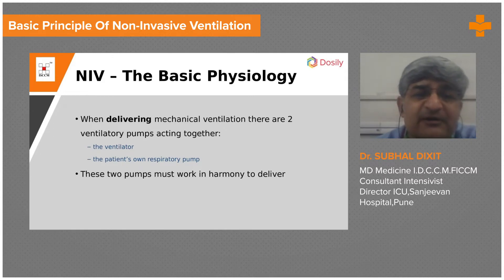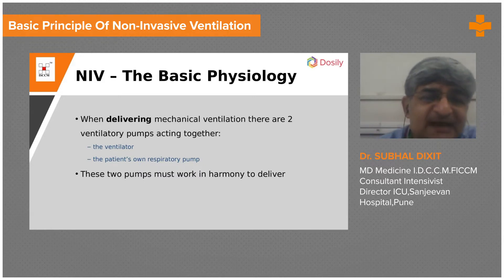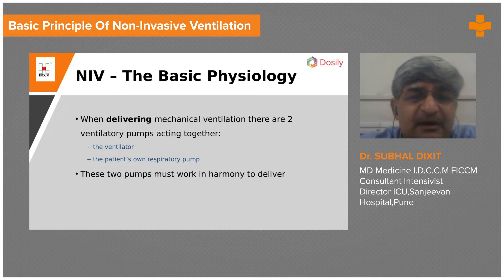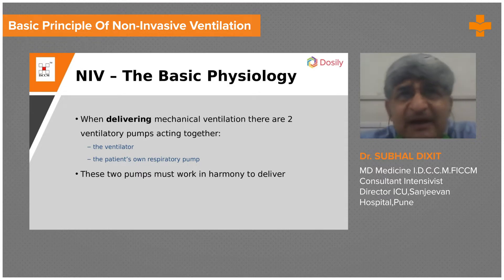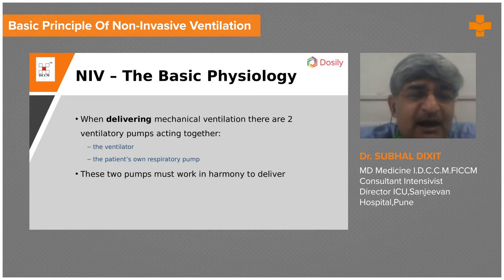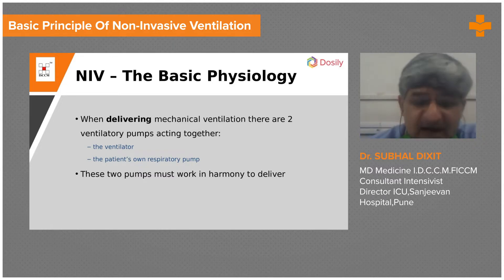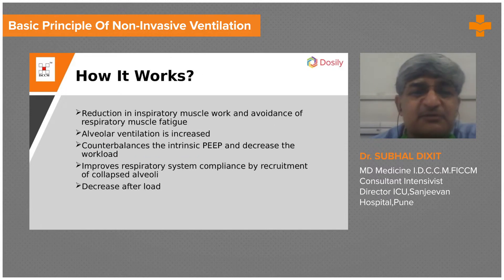When delivering mechanical ventilation, there are two types of ventilatory pumps acting: one is the mechanical ventilator or machine, and the second is the patient's own respiratory pump, where respiratory mechanics play an important role — the strength of the respiratory muscles, how the diaphragm is working, the spine condition, and whether there is kyphosis or kyphoscoliosis. These two pumps must work together for synchronized and harmonious delivery so that fatigue is minimized and respiratory function is maintained well.